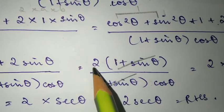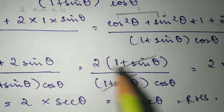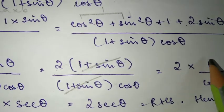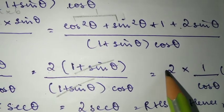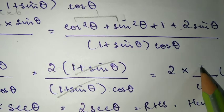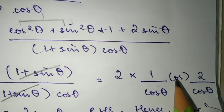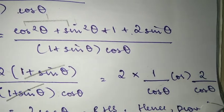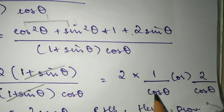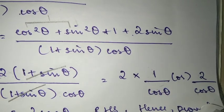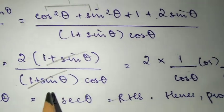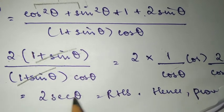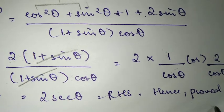After canceling, we get 2 divided by cos theta. We can write this as 2 times 1 over cos theta. Since 1 over cos theta is sec theta by formula, we get 2 sec theta, which is what they want on the right hand side. Hence proved.